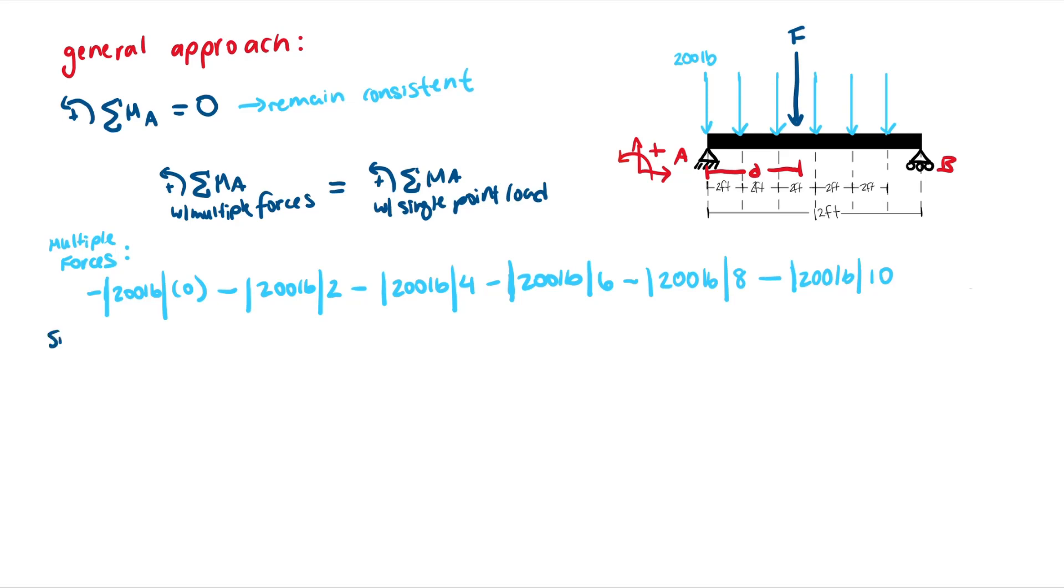Now looking at single point loads. Our F value, which we've already found, multiplied by the perpendicular distance, which is D, which is what we're looking for. It's negative because it's down and creating a clockwise moment. We know that F is equivalent to a negative 1200 pounds, as we've previously found. So you can input that, make sure you don't double negative, multiply by D, and this will be our second equation.